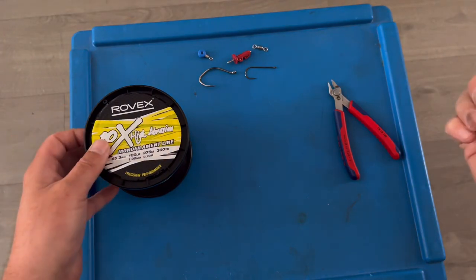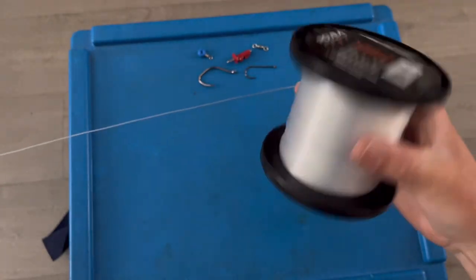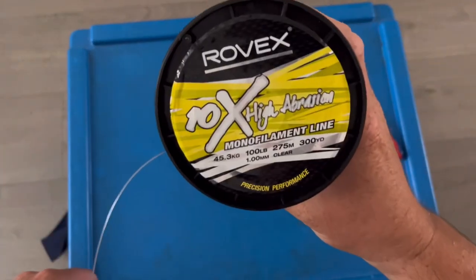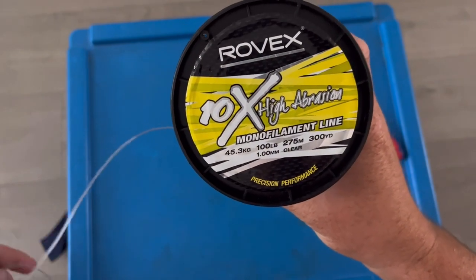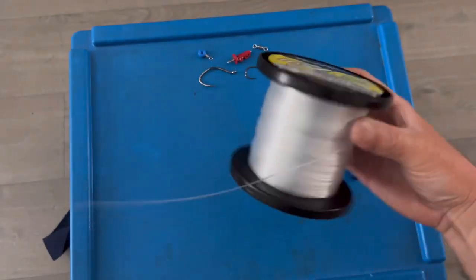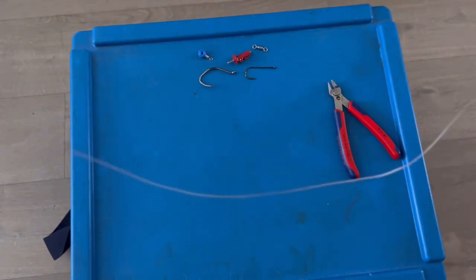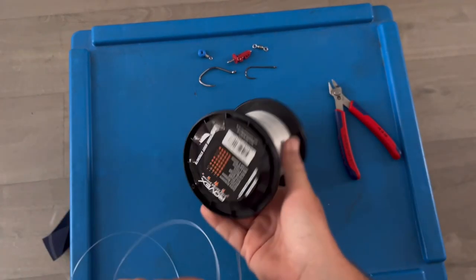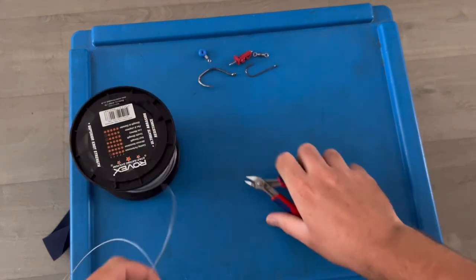Just a quick video on how I make my live bait rigs. There's loads of different ways to do them, but it's just the way I personally do it. Rovex 10x 100lb - take a nice length of it off. I'm going to be making a pulley rig today, but make sure you give yourself plenty of length on it.